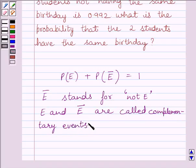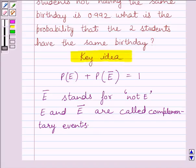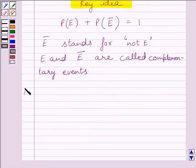Now we will use this discussion as our key idea to solve the given question. Let us now start with the solution. We are given that the probability of two students not having the same birthday is 0.992.